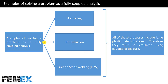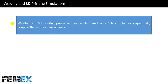Now I want to talk about examples of solving a problem as a fully coupled analysis. Processes like hot rolling, hot extrusion, and friction stir welding (FSW) must be simulated as a fully coupled analysis. All of these processes include large plastic deformations, therefore they must be simulated using a coupled procedure. Welding and 3D printing processes can be simulated as either a fully coupled or sequentially coupled thermo-mechanical analysis.